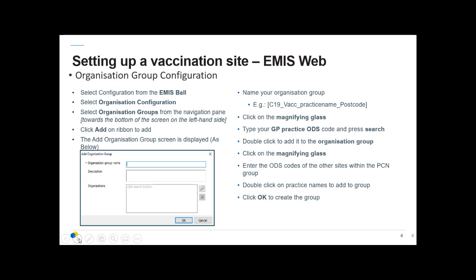Click on the magnifying glass, type your GP practice ODS code and press search, then double-click to add yourself to the organisation group. Repeat this process for everybody you want to be able to book into your appointments for the purposes of the vaccine. Click OK once you're ready to create the group.